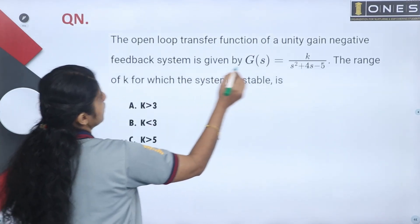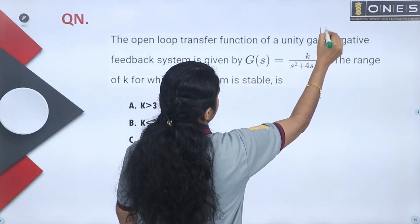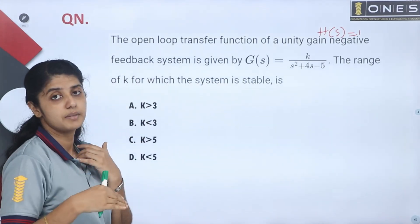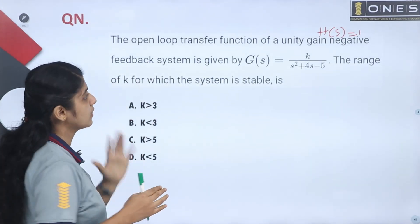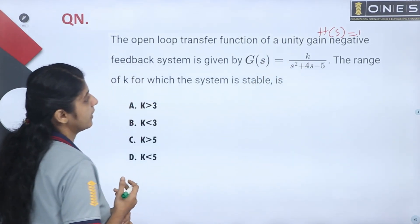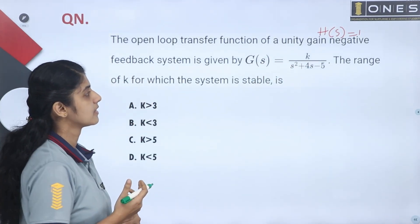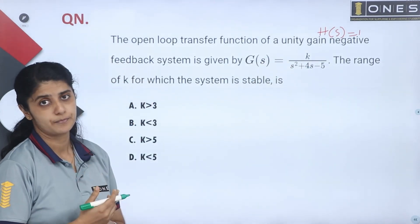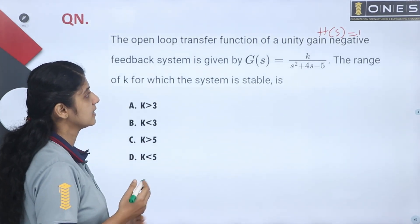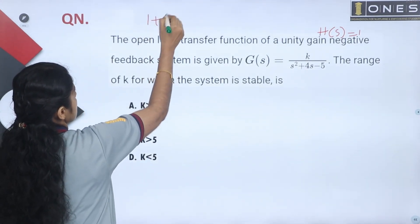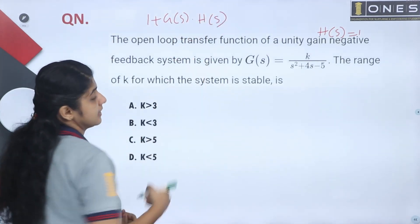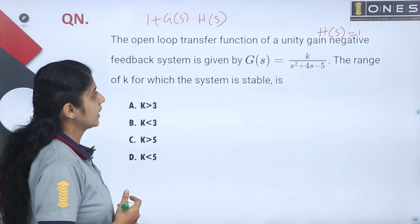The unity gain negative feedback system is given by H(s) equal to 1. The feedback H(s) is given by 1. So G(s) = k divided by s squared plus 4s minus 5. The characteristic equation is given by 1 plus G(s) into H(s) equals 0.